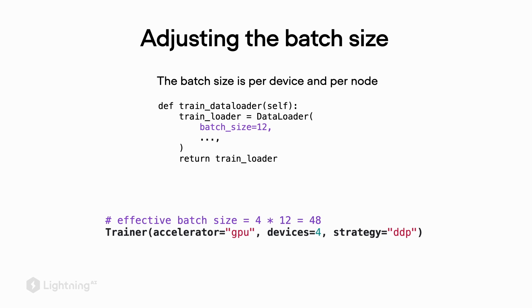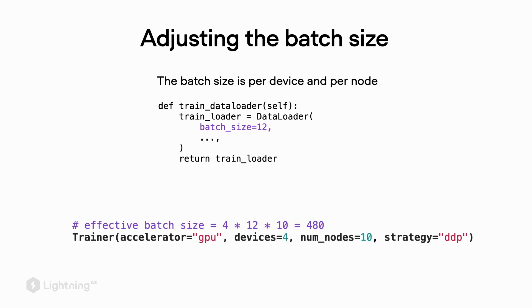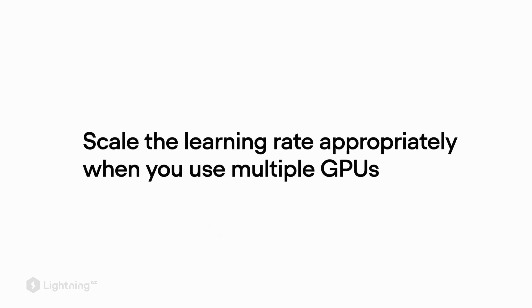You can also use distributed data parallelism across different compute nodes — for example, with 10 nodes in a cluster, the effective batch size becomes 4 × 12 × 10 = 480. Since the effective batch size differs from the regular batch size in normal backpropagation, you may need to scale the learning rate appropriately when using multiple GPUs. In the next video we will see a hands-on example of how to use distributed data parallelism and make adjustments to the batch size for good performance.